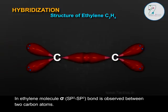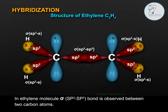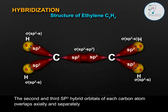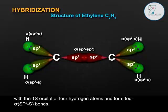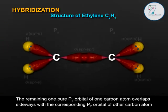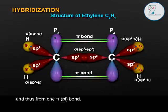In the ethylene molecule, a sigma SP2–SP2 bond is formed between the two carbon atoms. The second and third SP2 hybrid orbitals of each carbon atom overlap axially with the 1s orbitals of four hydrogen atoms, forming four sigma SP2–S bonds. The remaining pure Pz orbital of one carbon atom overlaps sideways with the corresponding Pz orbital of the other carbon atom, forming one pi bond.